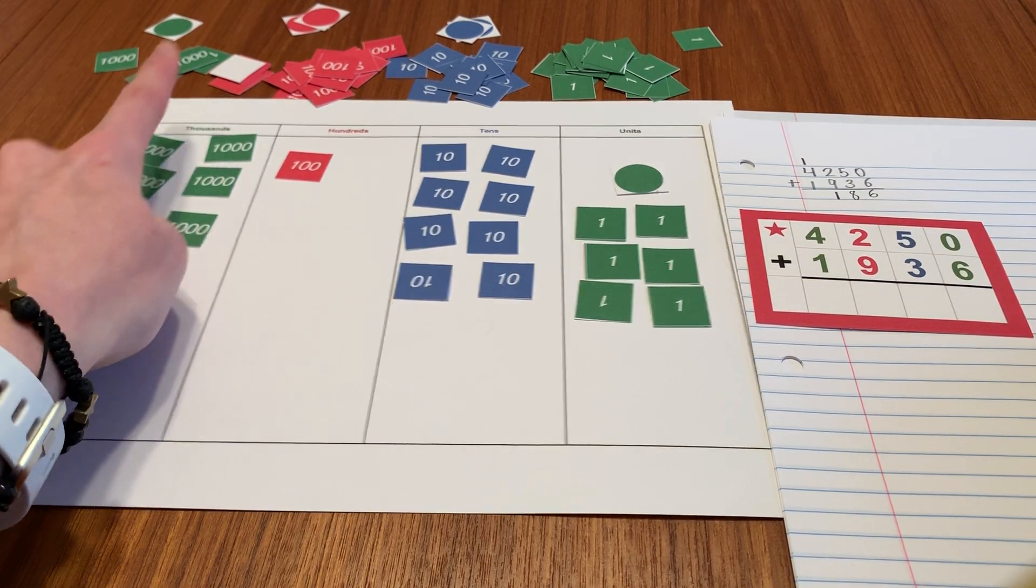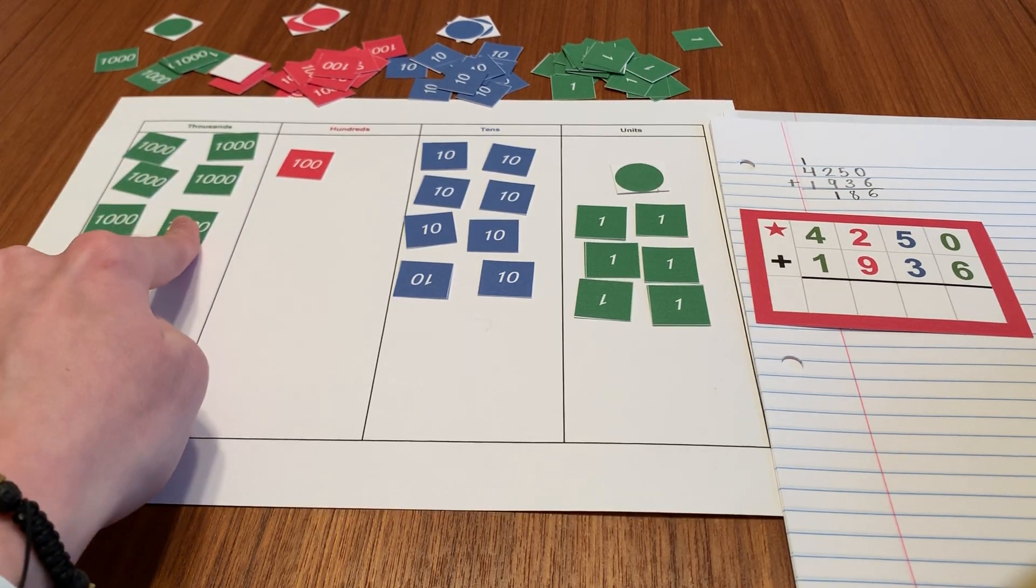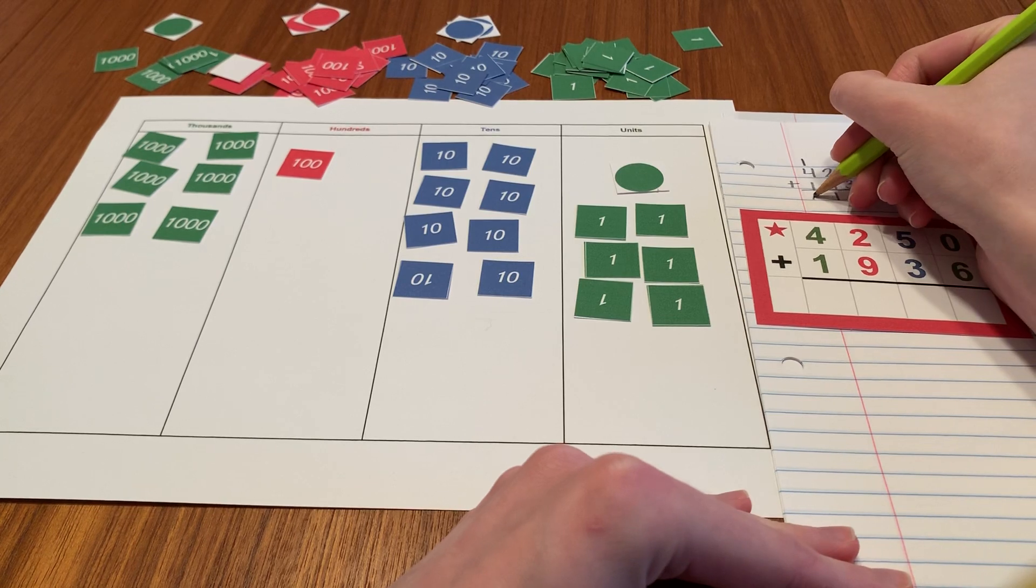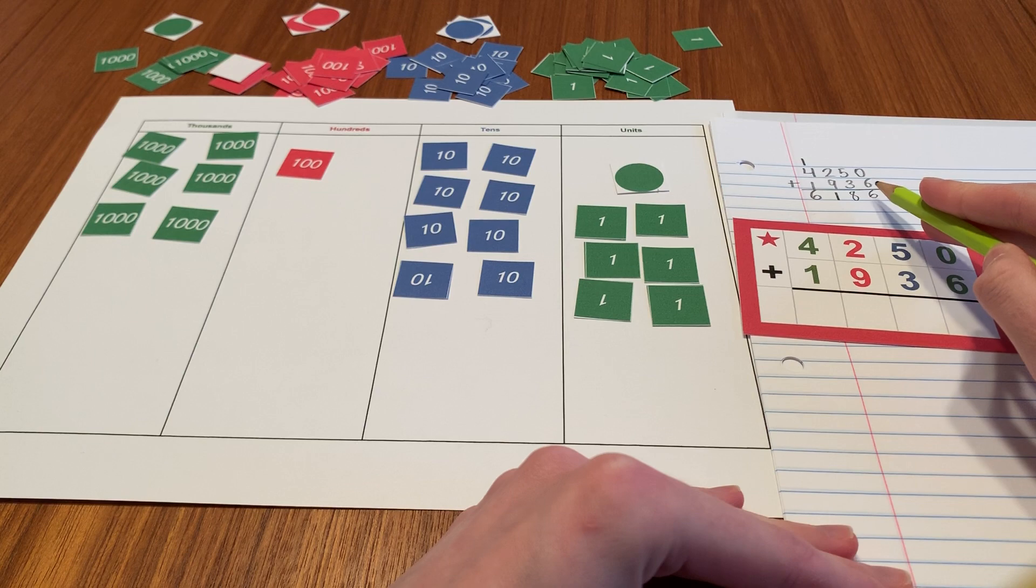One thousand, two thousand, three thousand, four thousand, five thousand, six thousand is my thousands place. Six thousand, one hundred, eighty-six. Six thousand, one hundred, eighty-six.